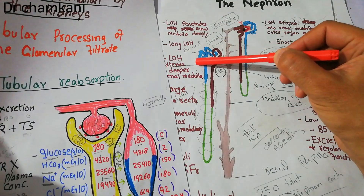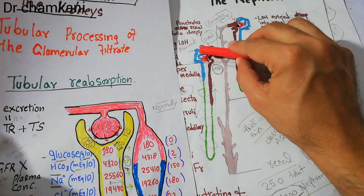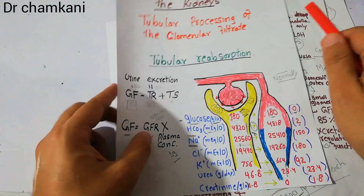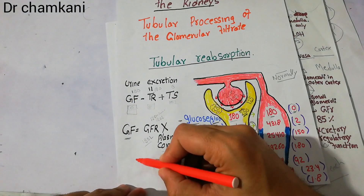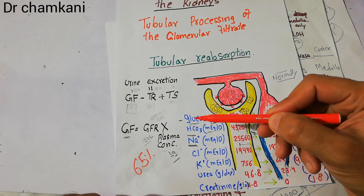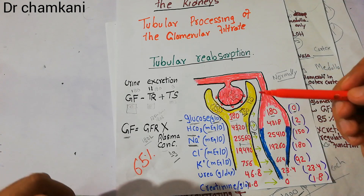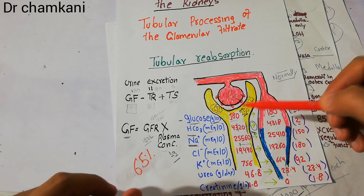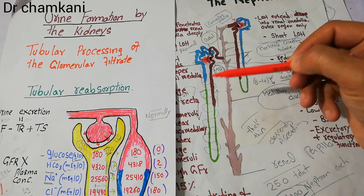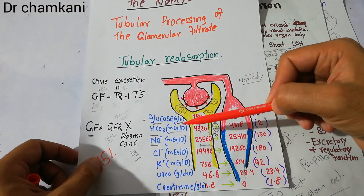Here we see this blue color area is the proximal tubule, and here we have the Bowman's capsule and the blood vessels — this small area has been enlarged. Around 65% of water, sodium, and chloride are reabsorbed along the proximal tubule. Apart from that, a lot of other ions are reabsorbed from the proximal tubule as well.